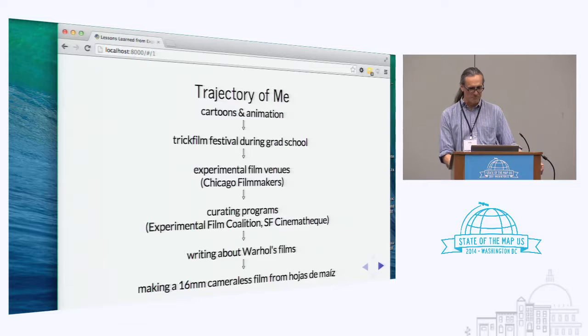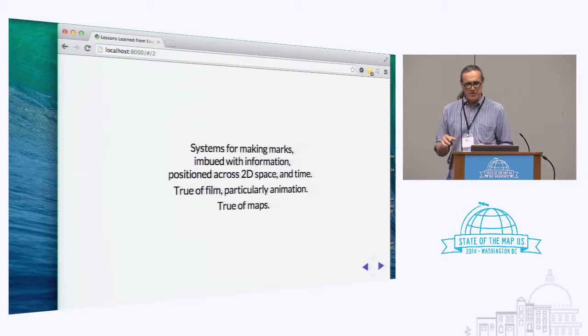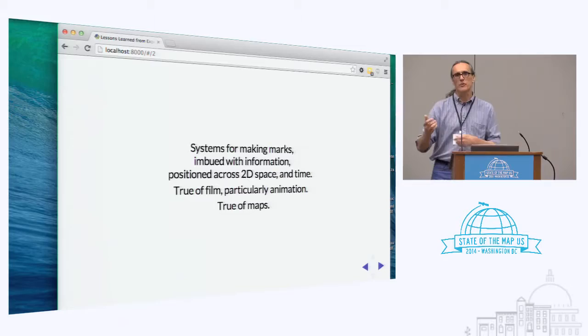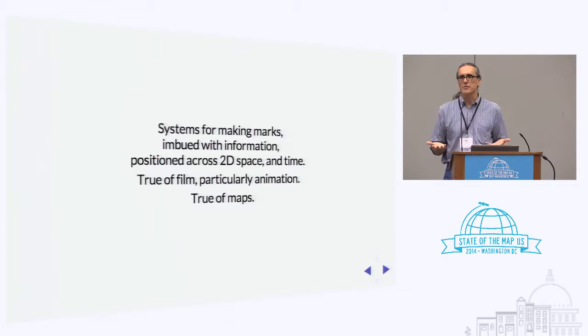The way I think about film and animation and maps is that they both have systems that have evolved for making marks that convey information across a two-dimensional space and in time. Films play for you; with interactive maps you work through them, unfold them, or work them out on a screen. In a certain way there's mark-making in both of these systems, and it's interesting to think about what they have in common or how they differ.